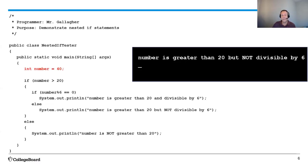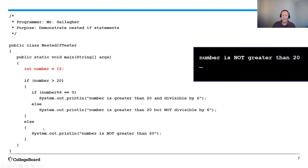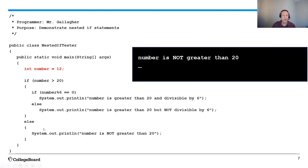Again, looking at the if statement inside of the if statement. But now what if I set number equal to 12? Well, here when I go to the first if statement is number greater than 20, it's not. So here I'm going to skip over the curly braces and go right to the else. And it's going to print out that number is not greater than 20.